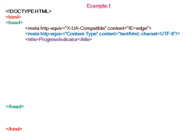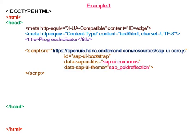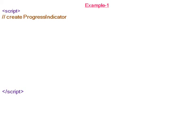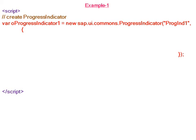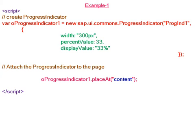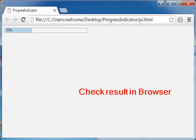In the first example, we will create a simple progress indicator. The theme is Gold Reflection. In the body section, we take a div element with id 'content'. In the application section, we create a progress indicator constructor. Width is set to 300 pixels, percent value is 33, and display value is '33 percent'.